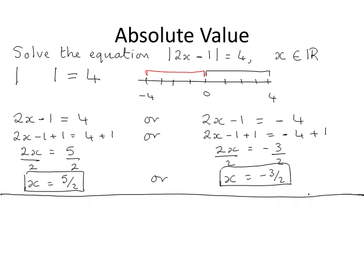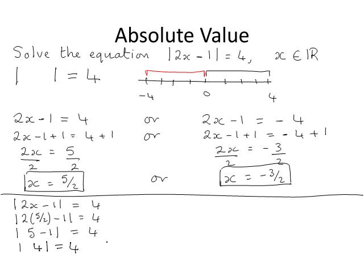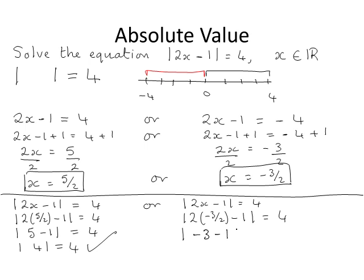We should check our solutions by substituting back into the original equation. When x equals five over two, the absolute value of two times five over two minus one equals the absolute value of five minus one, which is the absolute value of four, equal to four. This is true since the distance from four to zero is four. When x equals minus three over two, we get the absolute value of minus four equals four, which is also true since the distance from minus four to zero is four.